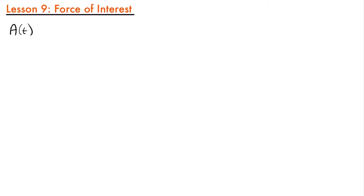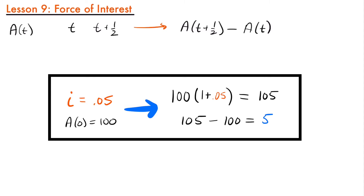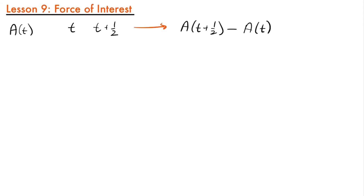Let's consider a scenario where we have an accumulated value of an investment, A(t), where t is measured in years. If we were interested in knowing the amount of interest earned by this investment in a one-half year period from time t to time t plus one-half, the amount of interest earned would be A(t + 1/2) minus A(t). For example, if I put $100 into an account with a 5% interest rate, at the end of the year I'd have $105, and subtracting the original $100 gives me $5 in interest.